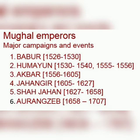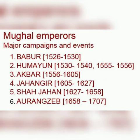Humayun (1530–1540 and 1555–1556): Humayun divided his inheritance according to his father's will — his brothers were each given a province. The ambition of his brother Mirza Kamran weakened Humayun's cause against Afghan competitors. Sher Khan defeated Humayun at Chausa in 1539 and Kanauj in 1540, forcing him to flee to Iran. In Iran, Humayun received help from the Safavid Shah. He recaptured Delhi in 1555 but died in an accident the following year.